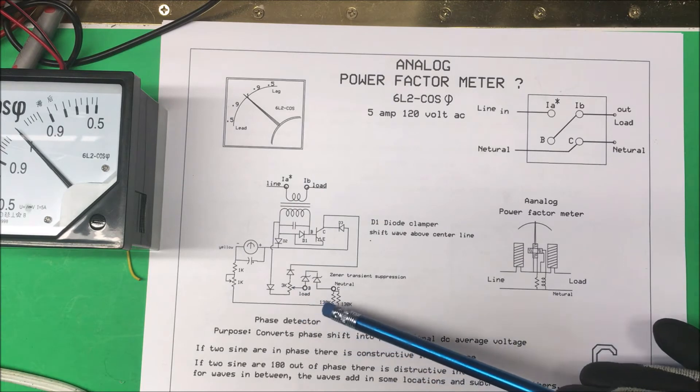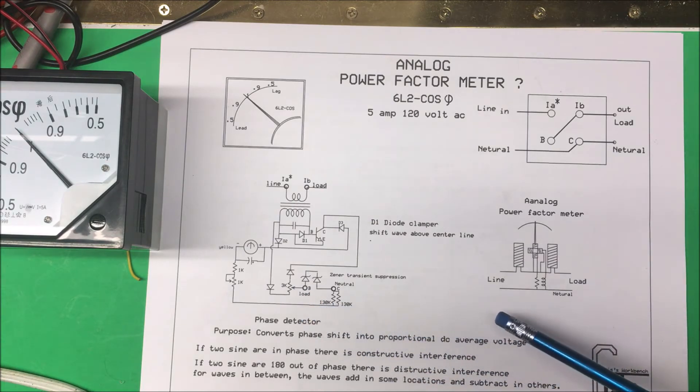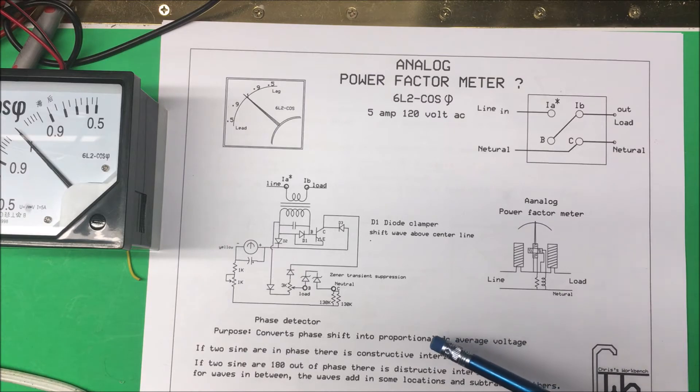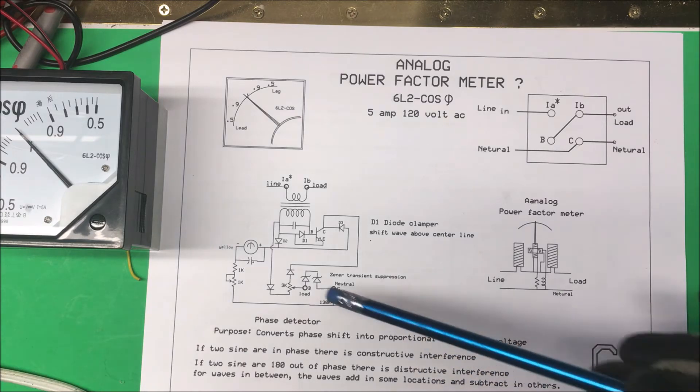What this thing does is it converts phase shift into a proportional DC voltage. If the two sine waves are in phase, there's a constructive interference. If the two sine waves are out of phase, there's a destructive interference. For waves in between, the waves add in some locations and subtract in others.